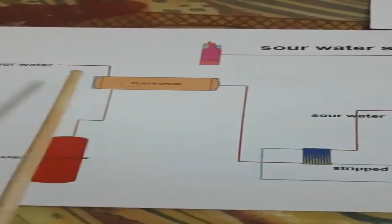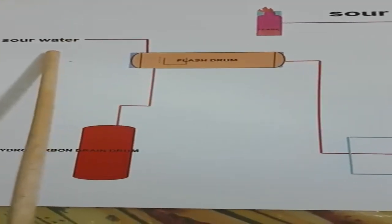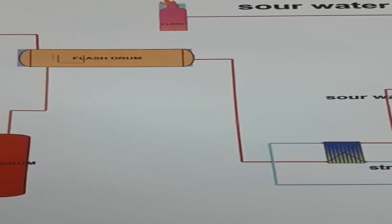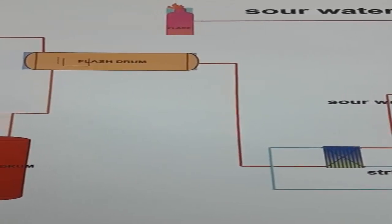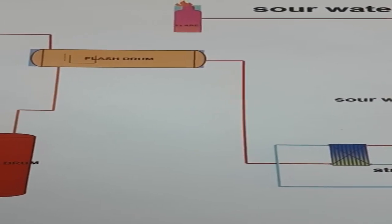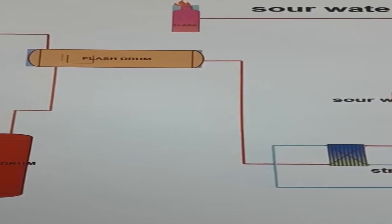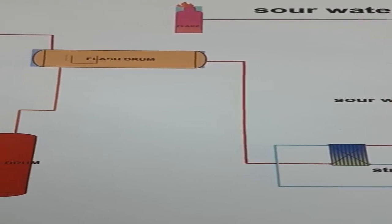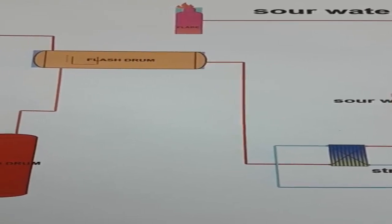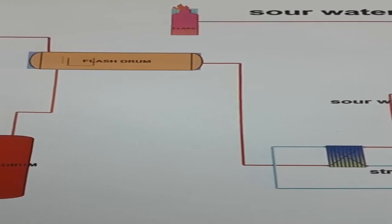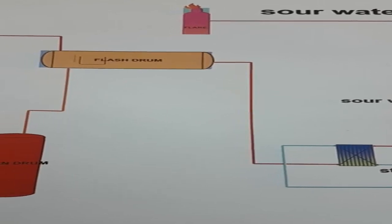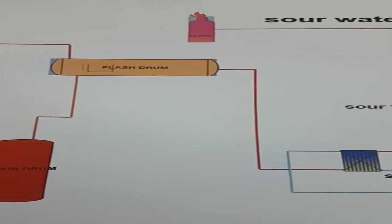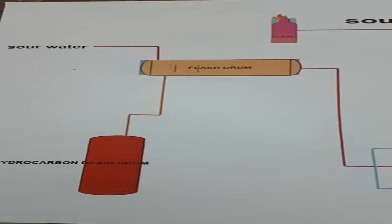Before understanding the process, we must know the sources of sour water — where it is generated and where we get it from. We get sour water from different sources such as distillation of kerosene, diesel, and naphtha plants; reforming plants; sulfur recovery unit; tail gas treating unit; and wash columns, wherever an acid component or gas is present and water is used for washing. The resulting water will be sour water.